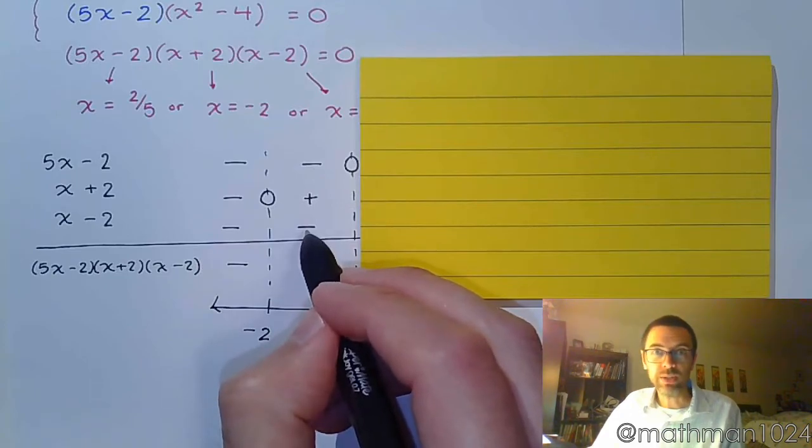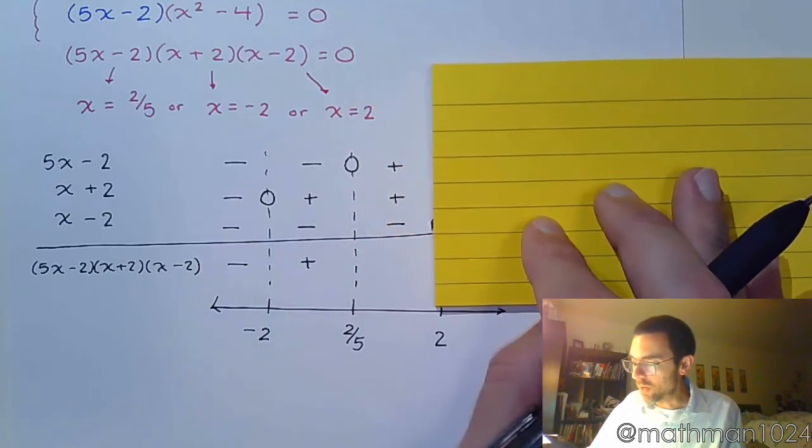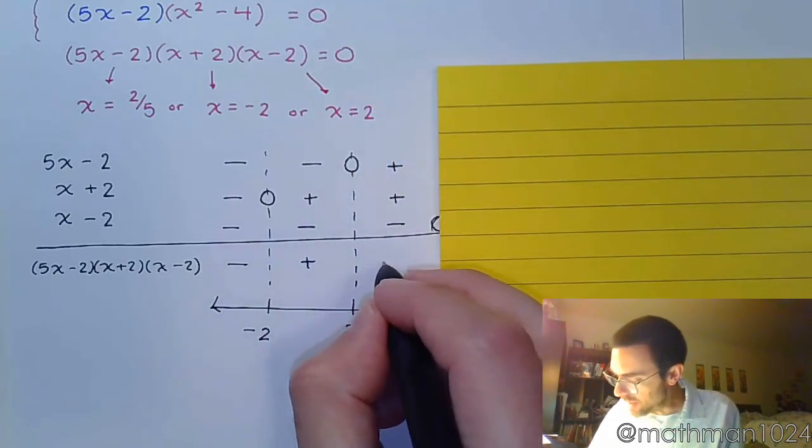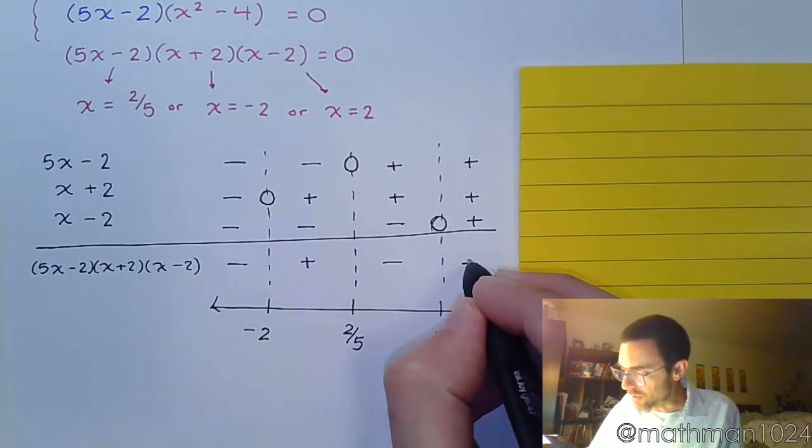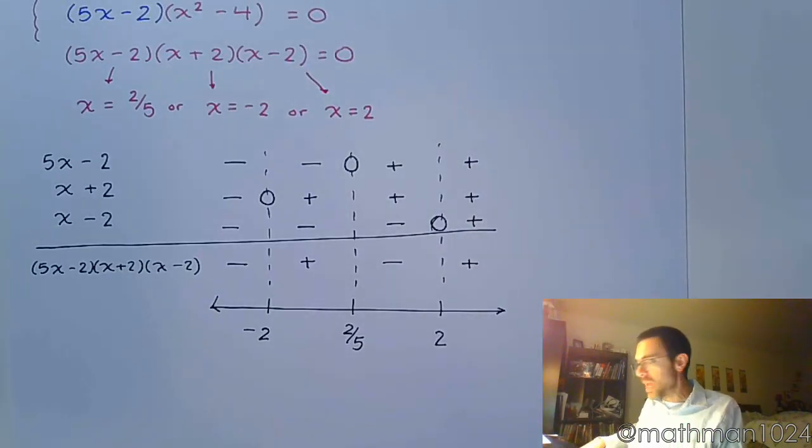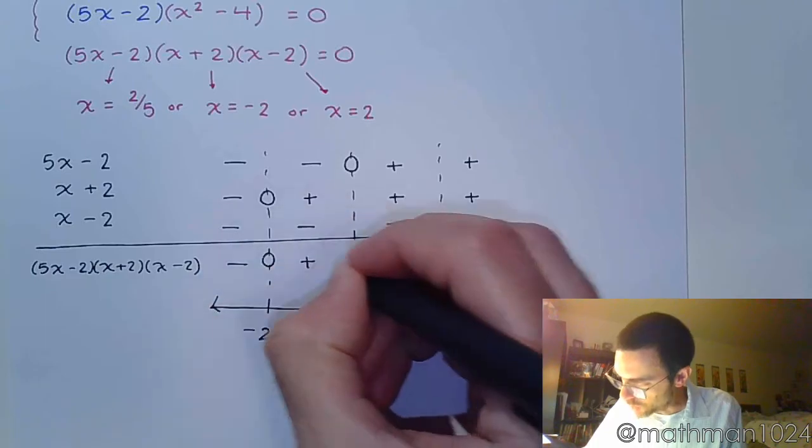A negative times a negative is a positive. Over here, you have one negative factor, so you get a negative in this region. And over here, everything is positive, so it's going to be positive in that region. And then where you have your critical values, you're going to be 0.